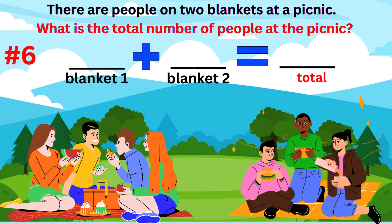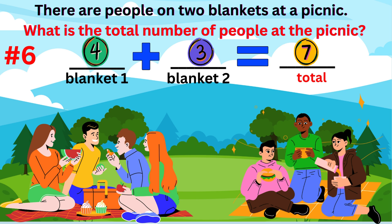Word problem number six. There are people on two blankets at a picnic. What is the total number of people at the picnic? The answer to the question is there are seven people at the picnic. The addition sentence is four people on blanket one and three people on blanket two equals seven people at the picnic.